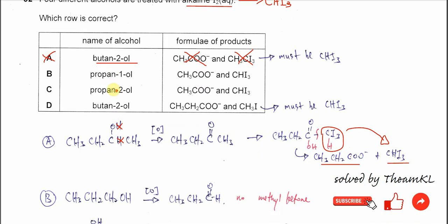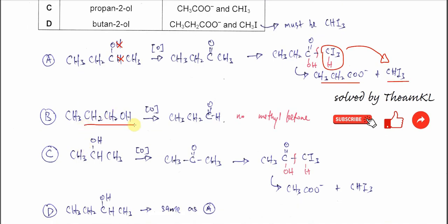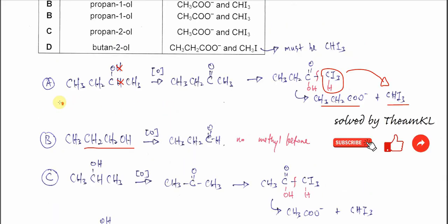For propane-1-ol, the structure is this, a primary alcohol. After it's oxidized, it will form propanal. Propanal has no methyl ketone, so therefore it cannot be the answer. So B is out.